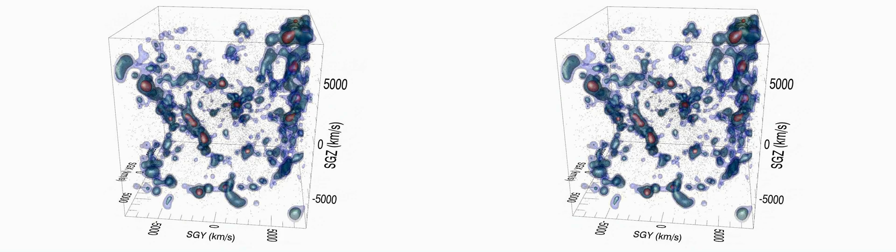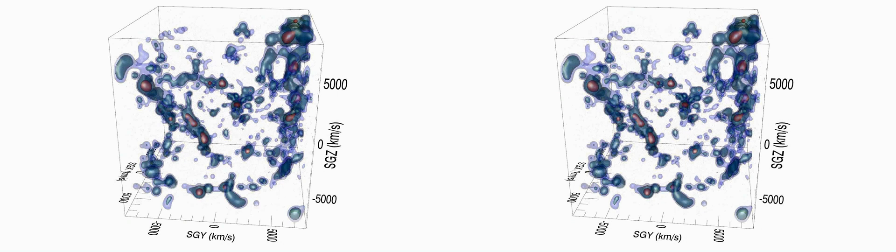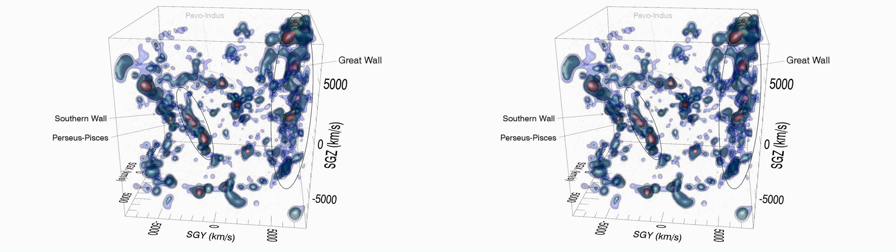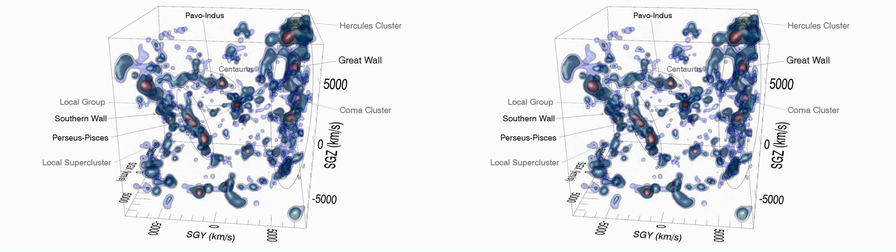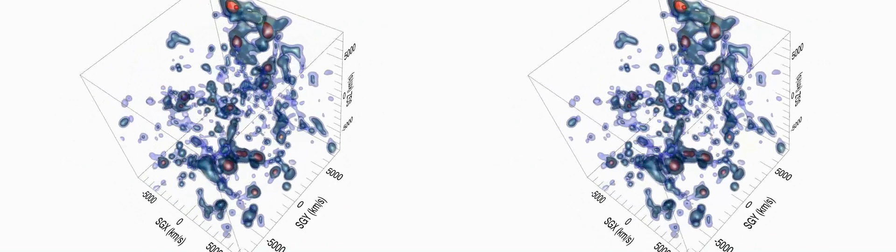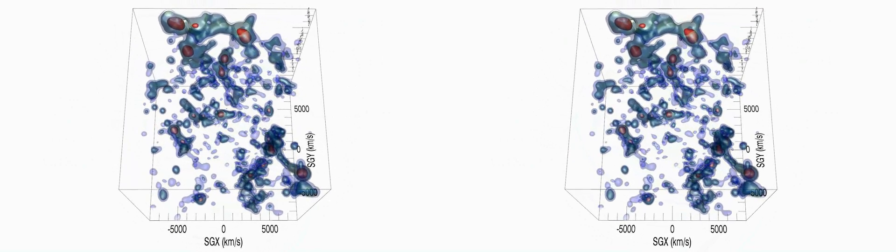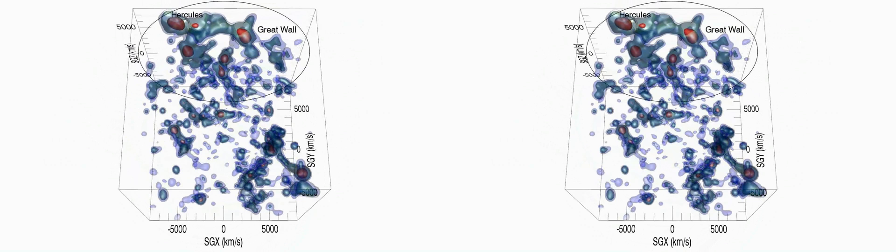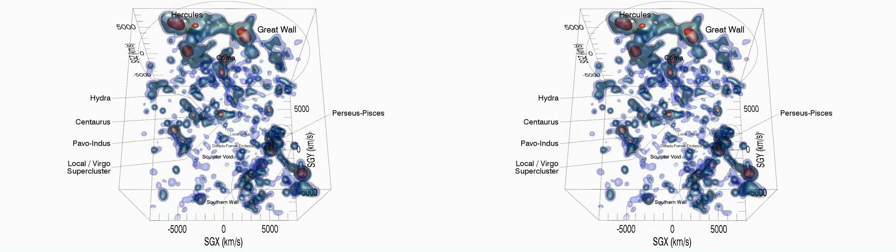Now the local region appears dramatically reduced in importance. The main structures are the Great Wall and the Percy Species Filament with the Southern Wall. Pavo Indus is significant too. A rotation takes us close to a polar view. We see the importance of the Great Wall and the Hercules cluster and the other region within it. The Percy Species Filament is important and we see its connection with the Southern Wall. The local subcluster is not so important.